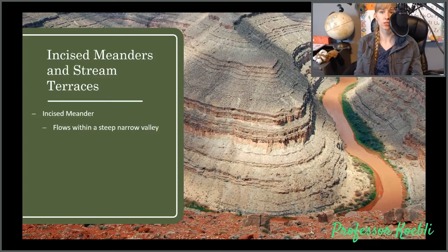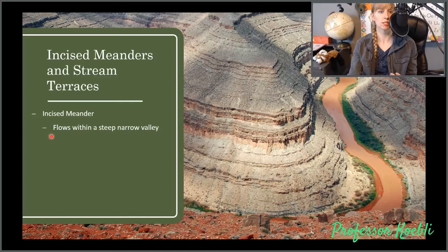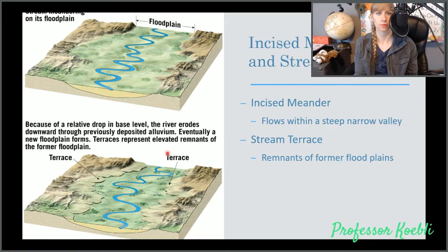Meanders form when a stream is near base level. If base level falls, you're going to have down cutting starting again. This creates steep, narrow valleys that mimic the meandering stream.